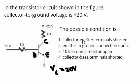The first condition is collector-emitter terminals shorted. If collector-emitter terminals are shorted, this connection will be grounded, which means the collector voltage at this terminal in this NPN transistor will be zero and not 20 volts. So this is ruled out.